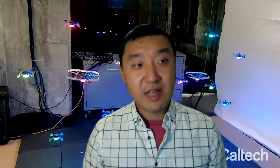Finally, interactive learning is useful in AI-driven design. If you think about things like protein design, nanostructure design, or material design, the typical way to do this process is to run a simulation or run an experiment of a design, and measure the properties of interest of that design, such as the thermal stability of a protein.